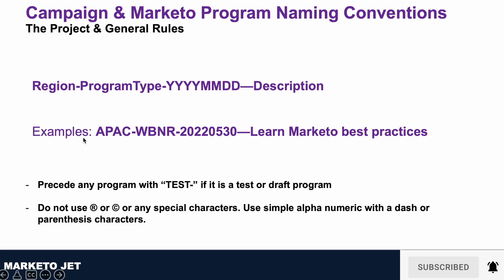Here is an example of how the program name will look. My region is APAC. The program type I want to use is webinar, so I have used WBNR. You can use any format that suits your organization and your needs. I have seen people use WB or even shorter abbreviations, but have it written down so it is consistent across your organization. This is followed by the year, 2020, 05, and 30, then a double dash, and then the program description. Make sure not to use any special characters in your naming convention, such as dollar signs, copyright symbols, or any other special characters.